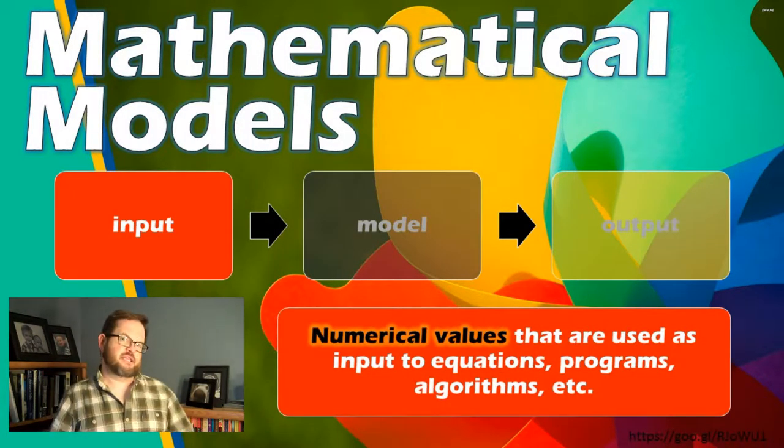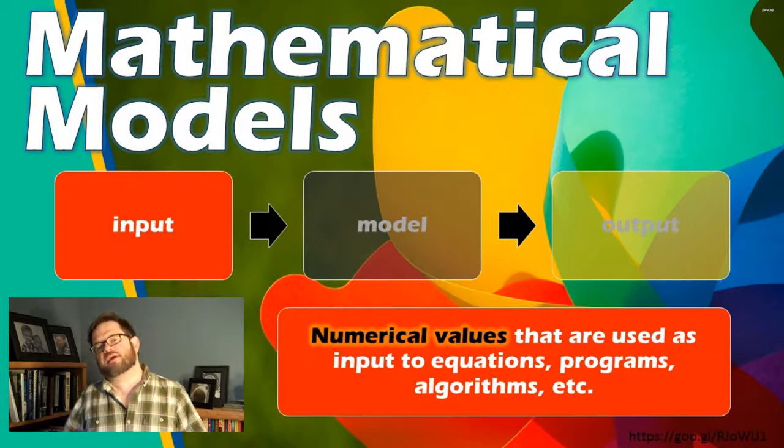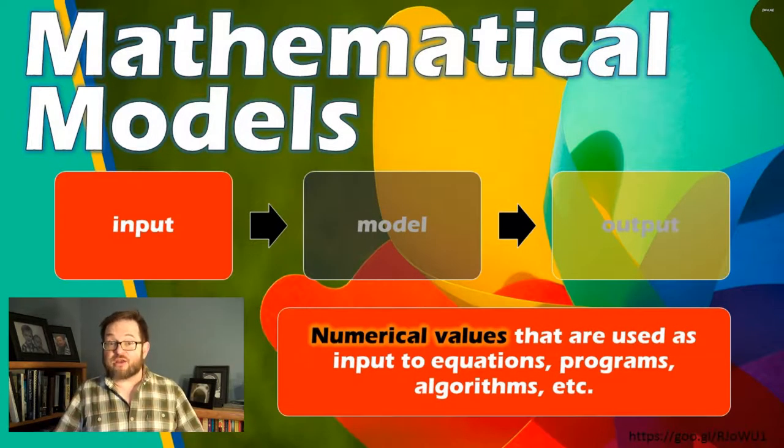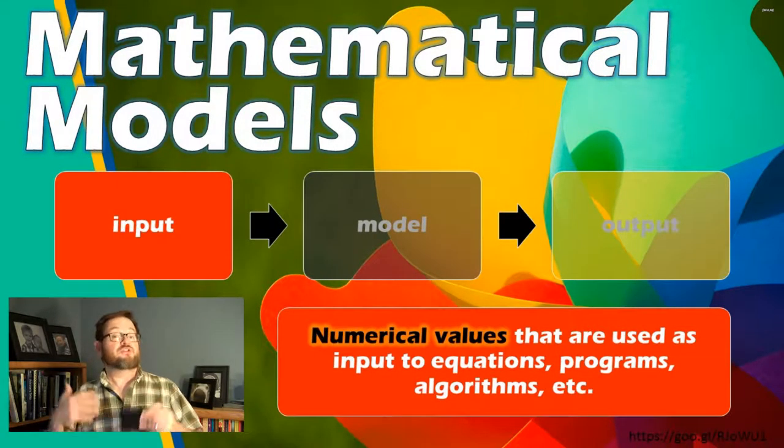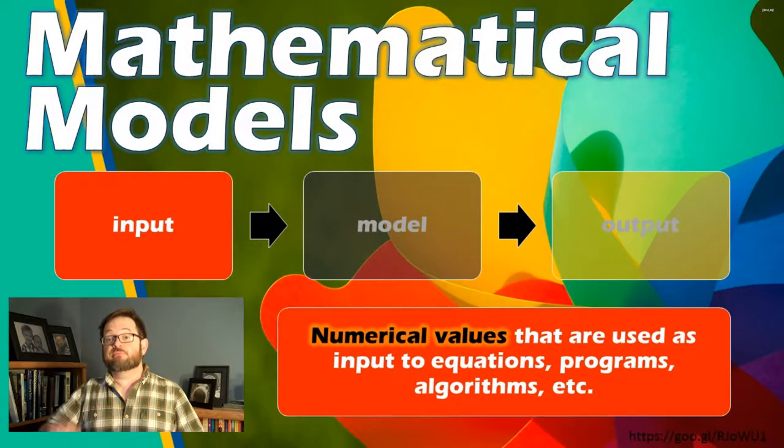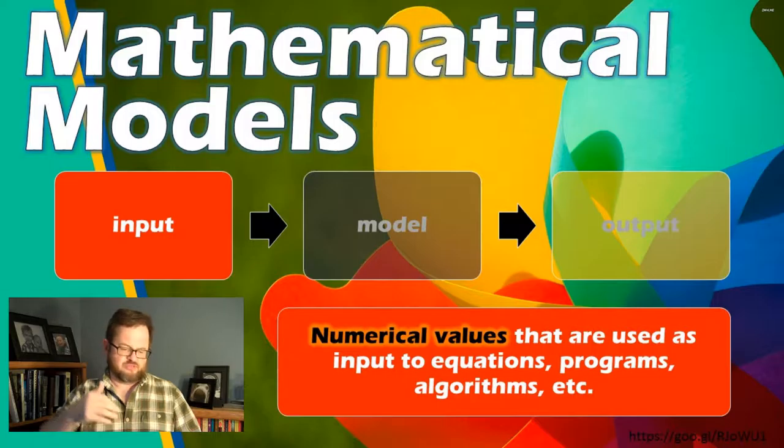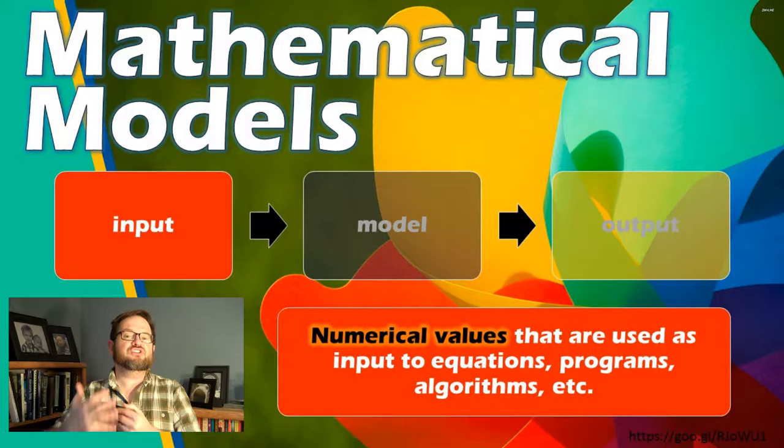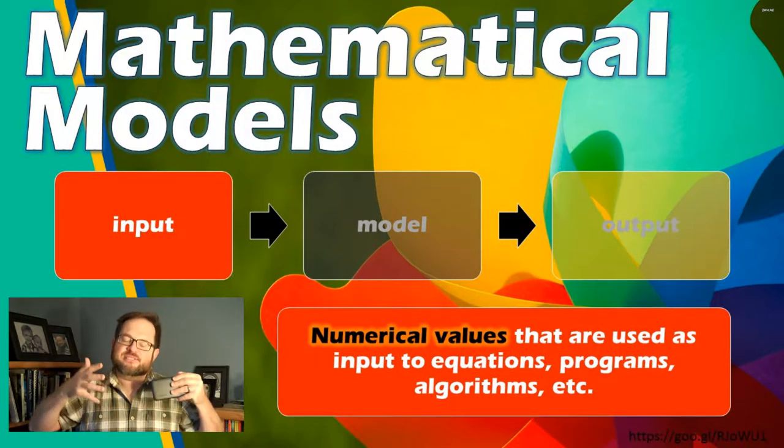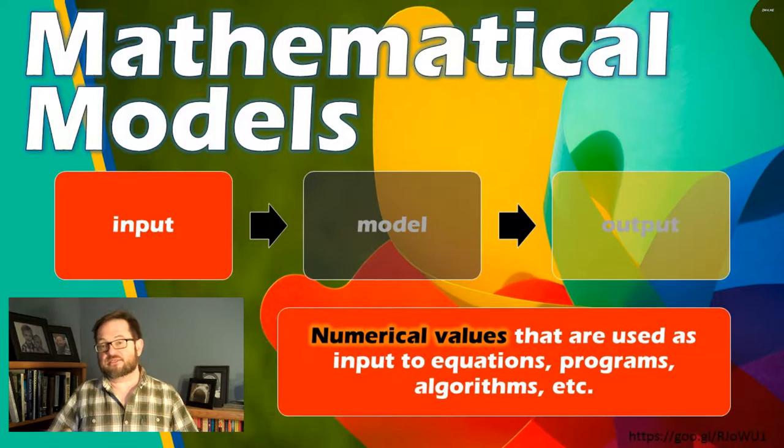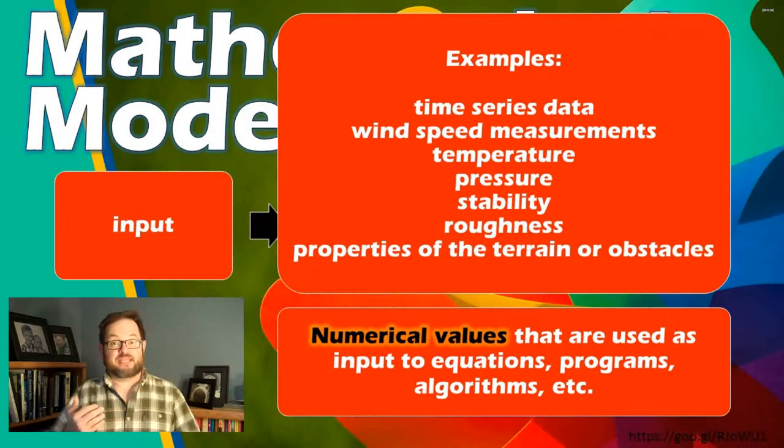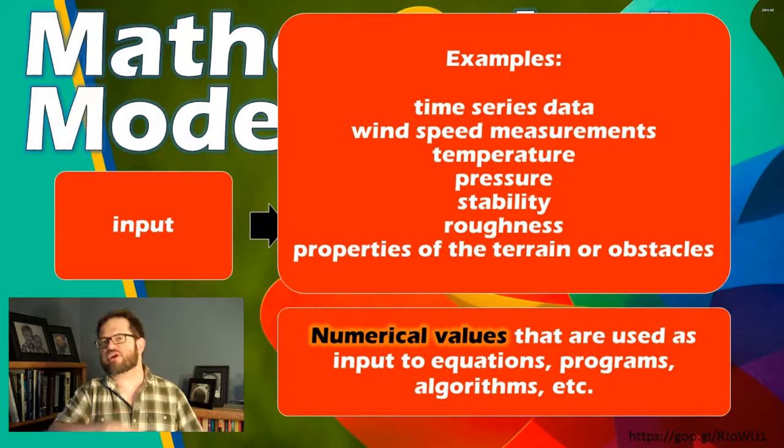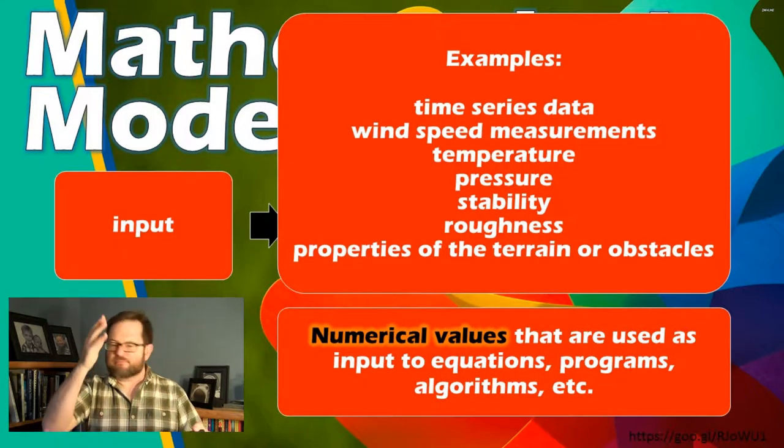So if I hide the model and the output part for right now, let's focus on the input aspects of a mathematical model. In the context of a mathematical model, the input is going to be in the form of numerical values that are used as input for the equations or the programs or the algorithms that you're going to be working with. This is the data that is given to you or that is observations or whatever that is used as input into whatever your model is. For example, that might be time series of data, that might be wind speed measurements, temperature, pressure, humidity, stability, roughness, or whatever.